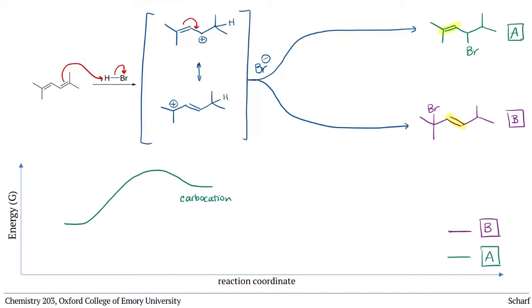The more substituted a double bond, the more stable it is, due to hyperconjugation. We learned about that when we studied E1 eliminations, which tend to give the most substituted alkene products.